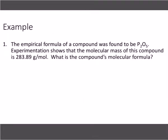So here we go. Let's jump into a problem together. Empirical formula is given to us. There's going to be problems where I give you percentages. You have to figure out the empirical formula. Then, from there, use that data to figure out the molecular formula. But it says it's P2O5. What's the name of that compound? Diphosphorus pentoxide. Experimentation shows that the molecular mass of this compound is 283.89 grams per mole. What is the compound's molecular formula?